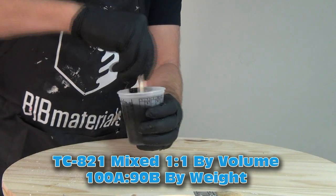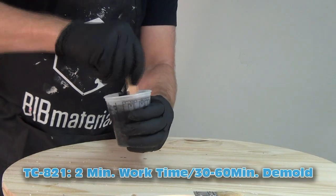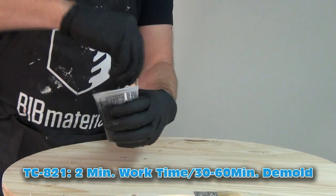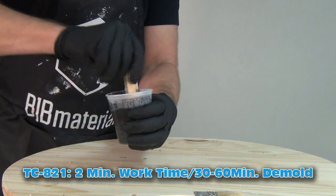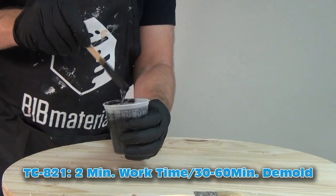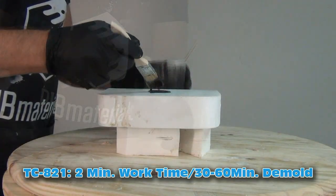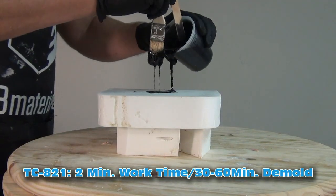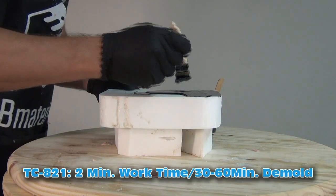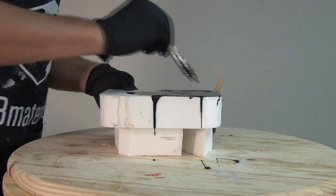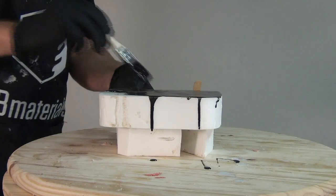It's important to remember the working time whenever you're working with a fast setting material like this. Again, this is a two minute working time at room temperature and a 30 to 60 minute demold. Obviously we're not casting a part with this, but typically what I found is in about 20 minutes you typically have a layer that you could easily put another coat on top of. So the recoat time is typically about 15 to 20 minutes, and then when you hit that tack free level where you could actually start sanding on it, typically that's going to hit at about 60 minutes or so, sometimes a little bit longer for really thin cross sections.